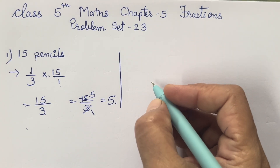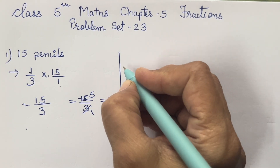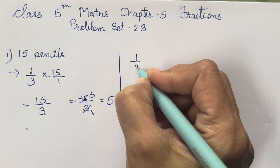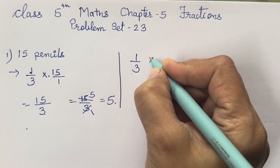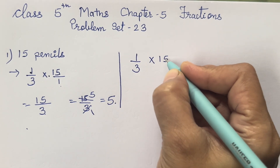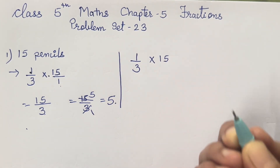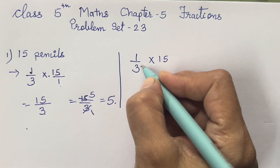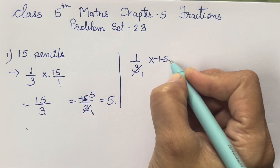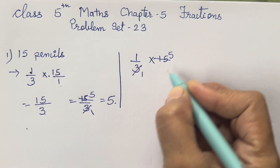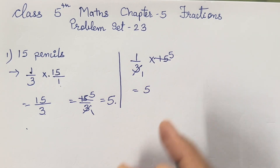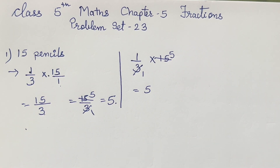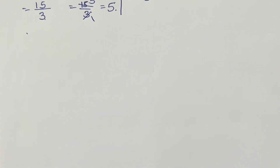The second method: 1/3 multiplied with 15 — you can divide directly here, no need for the extra step. 3 ones are 3, and 3 fives are 15. So your answer is 5. Whichever method you find easy, you can use it — I am going to show you both methods.